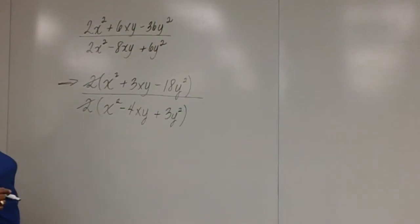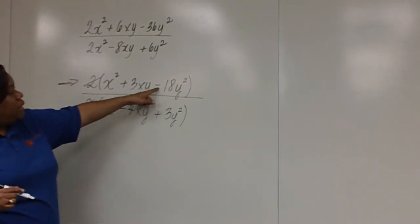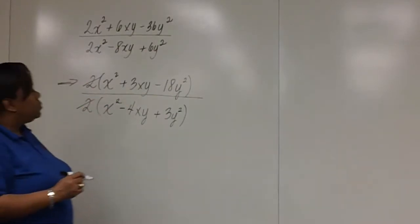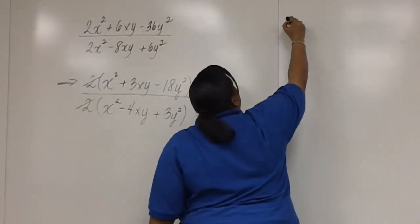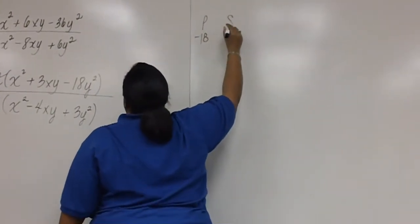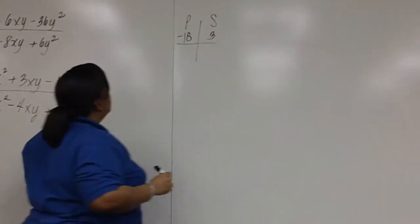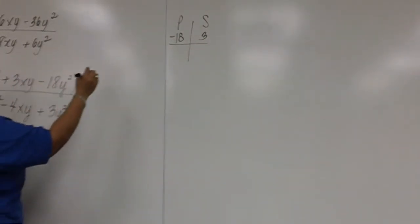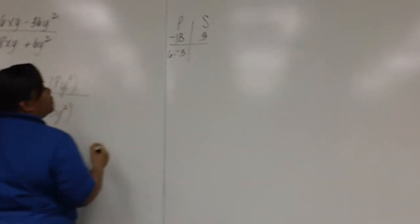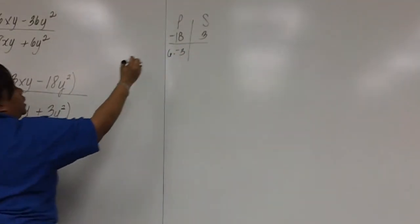We need a product of negative 18 and a sum of 3. Well, 6 times negative 3 gives us the negative 18 that we need.